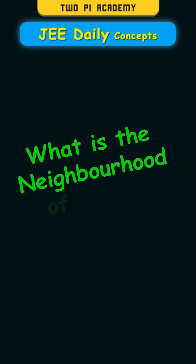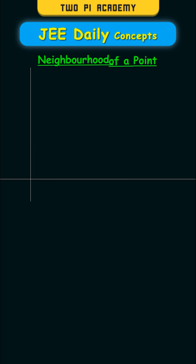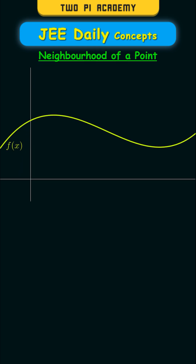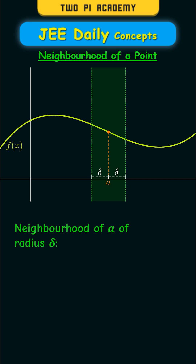What is the neighborhood of a point? If you consider a function f of x and a point on it at x equal to a, then the interval surrounding a with a radius of delta on either side is known as the neighborhood of a of radius delta. N-delta of a is equal to the open interval a minus delta, a plus delta.